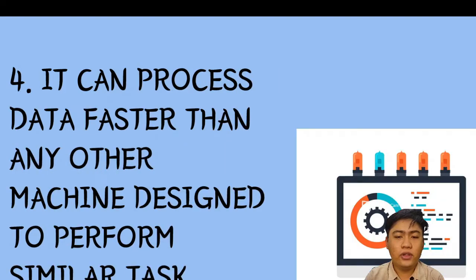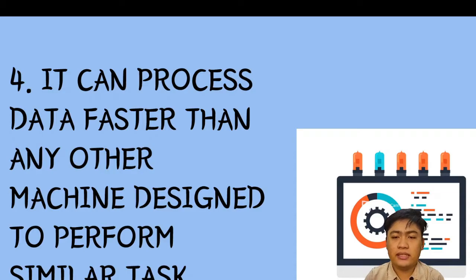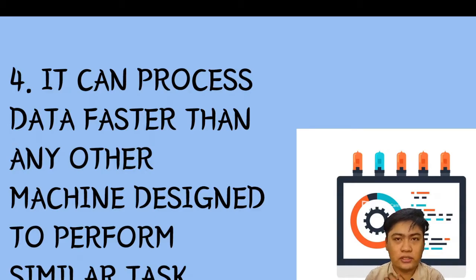The fourth capability is that a computer can process data faster than any other machine designed to perform similar tasks. A computer can perform millions of operations in split seconds.